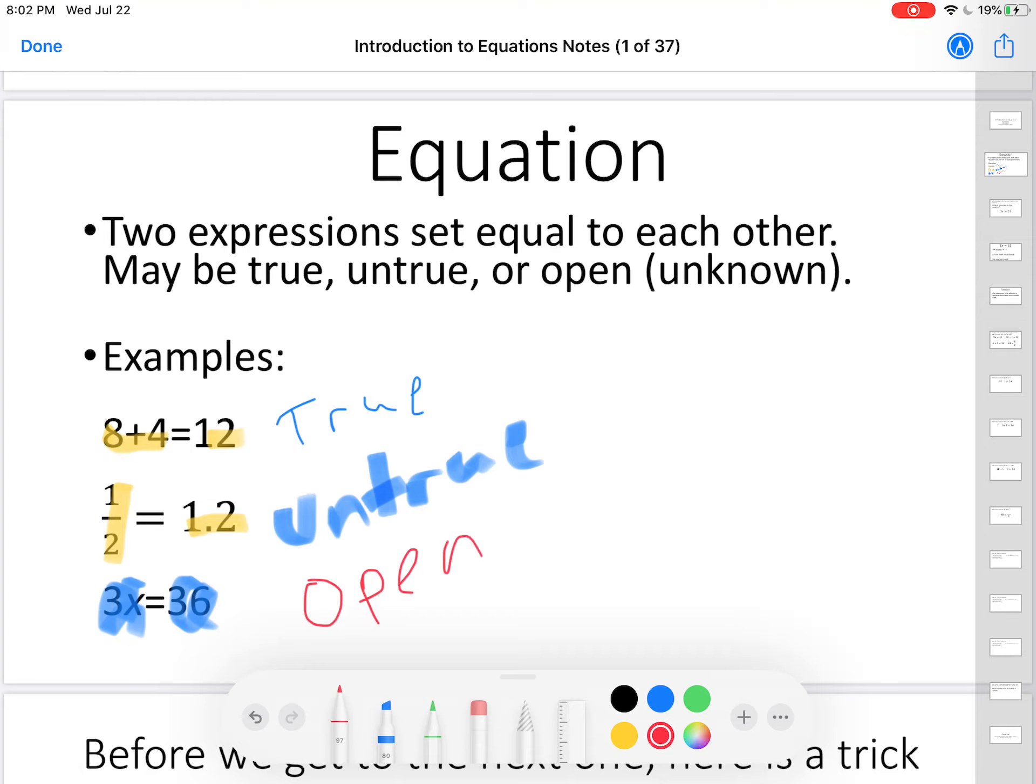You have the basics. Equations are two expressions set equal to each other. They might be true, they might be untrue, or we might not be able to tell, in which case they're called an open equation.